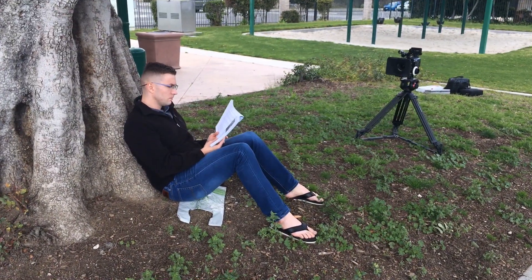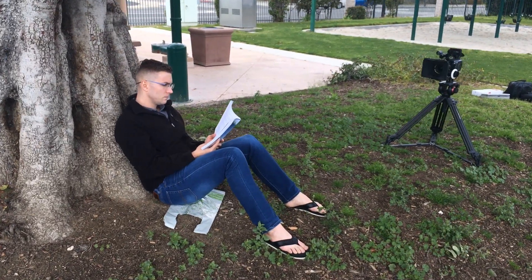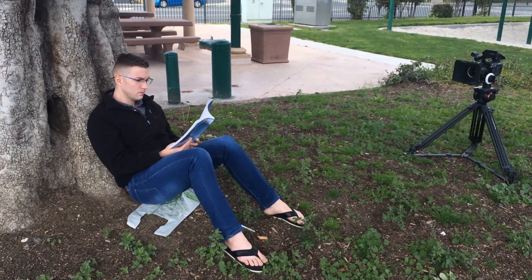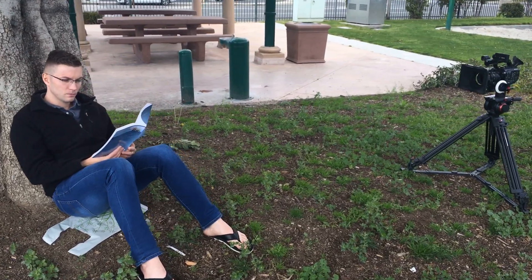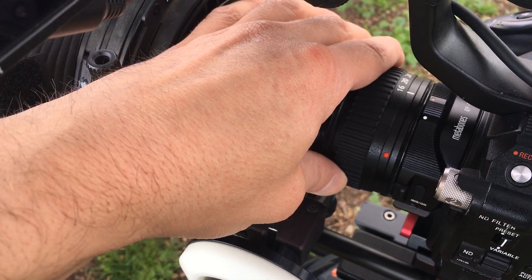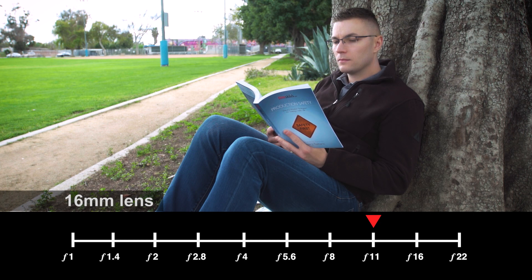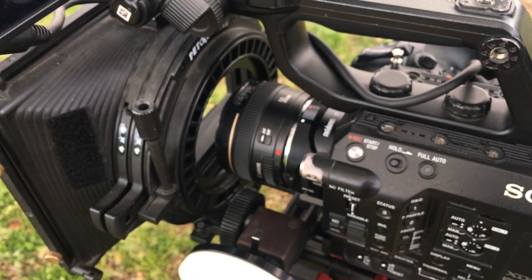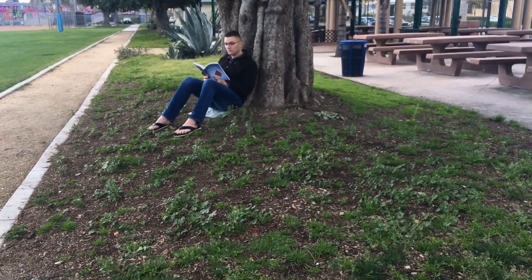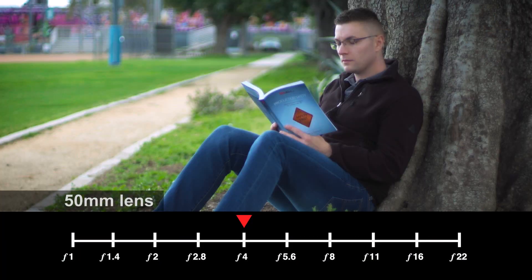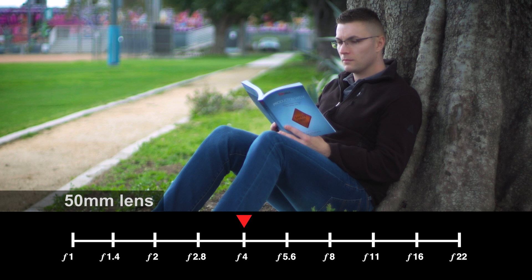The size of your depth of field is a powerful creative tool that lets you draw the audience's eye to what you want them to look at within the frame. For example, with a subject reading in the park, if the story dictates that the audience should see everything happening, I'll use a 16mm lens and position the camera closer, then close the aperture to f11 for a deep depth of field — notice how your eye roams around the frame. But if I want the audience to focus on the character, I may use a 50mm lens, back the camera up for the same framing, and open the aperture to f4, directing the audience's eye with a shallower depth of field.